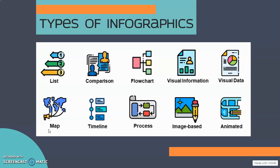The first type is the list infographic. A list infographic is used to visualize a collection or list of resources, tips, or examples. The purpose is to make the list more attractive compared to text-based points. This can be done by using an icon or simple illustration for each of the points in your infographic.